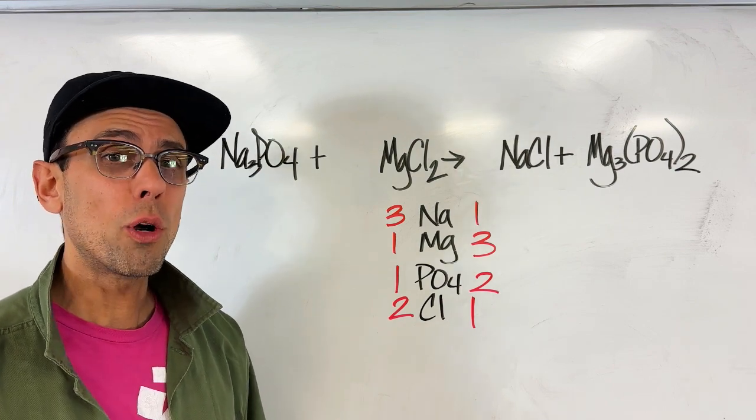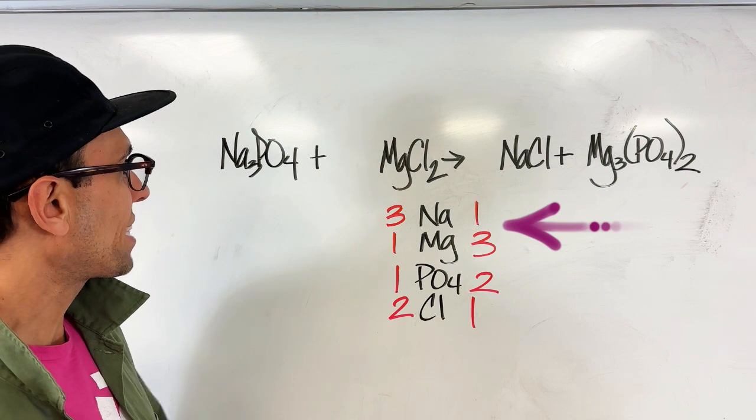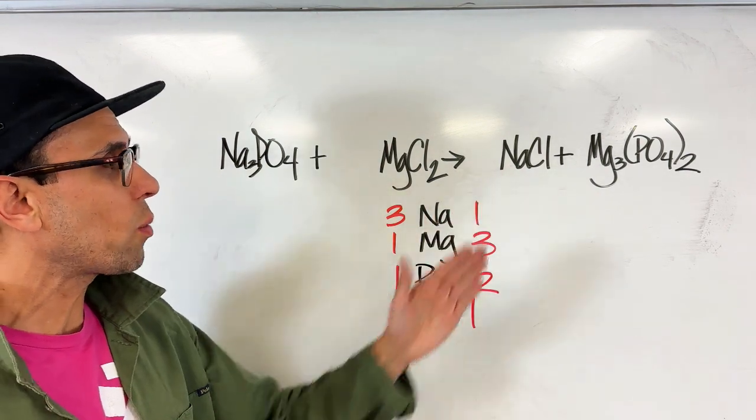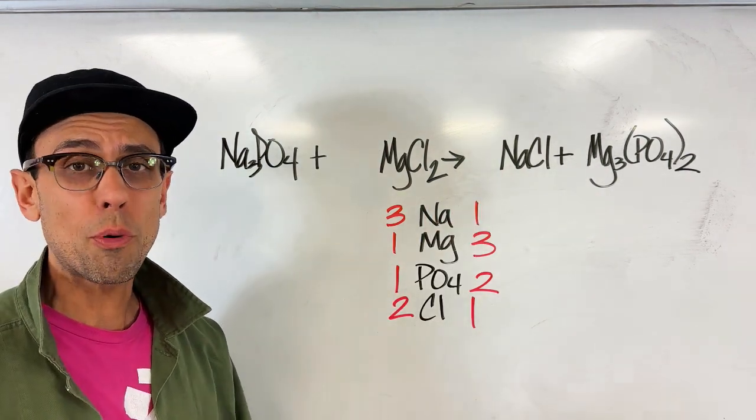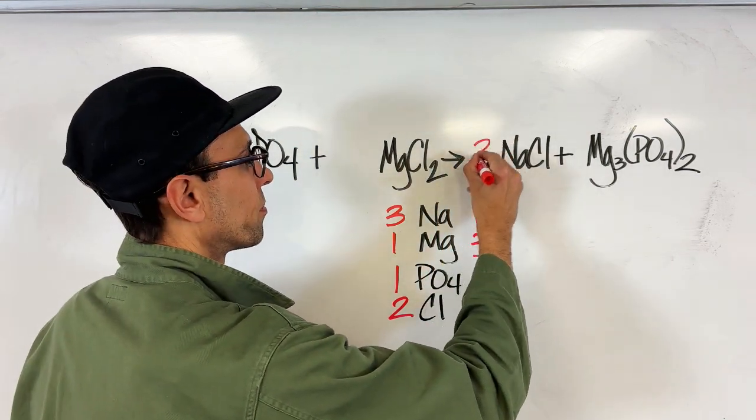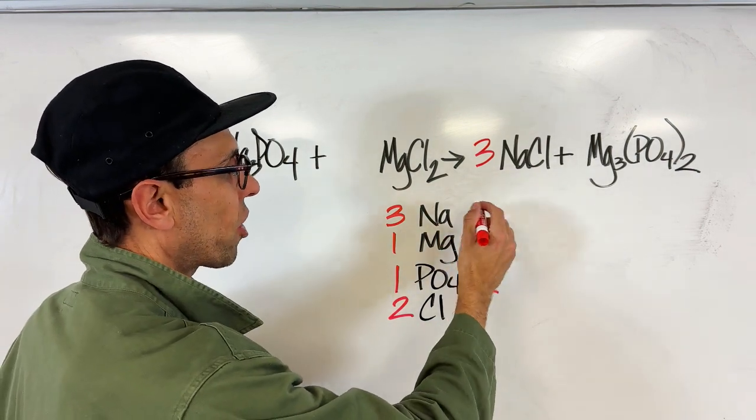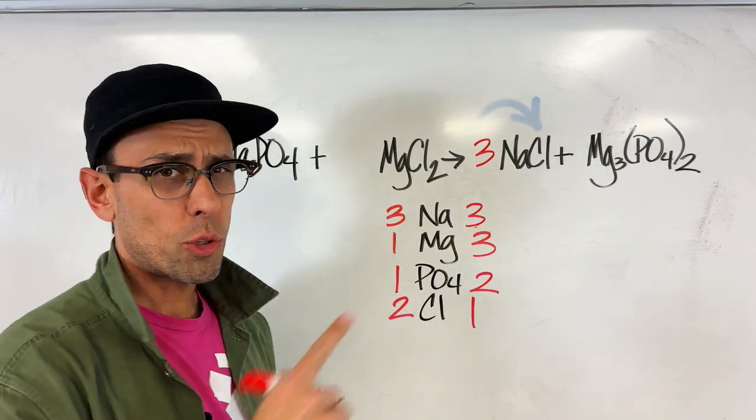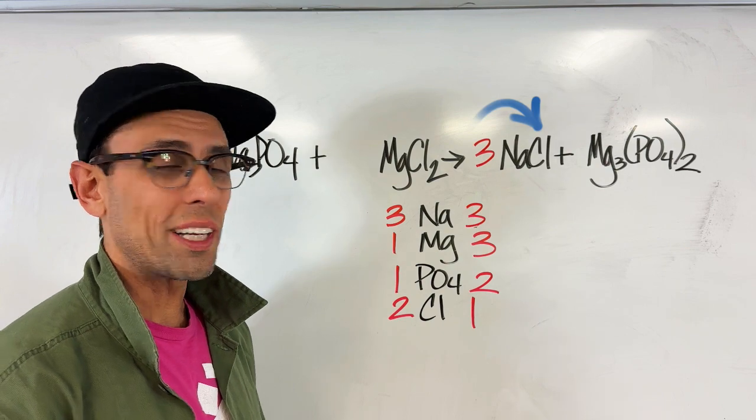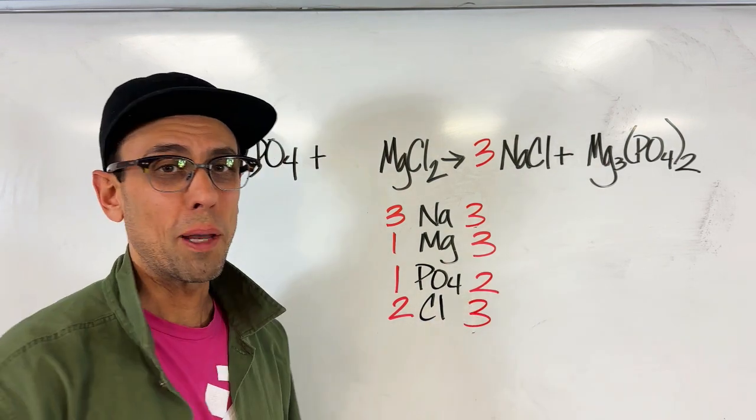Now, using the Minho approach, I focused on the metals first. I'm going to look at sodium and notice that since there's three over here and only one there, a coefficient of three on the product side will resolve that issue. Now of course I have to change this number on my chart, but that three is also going to affect the chlorine as well, so I'm going to go down here and replace the one with a number three.